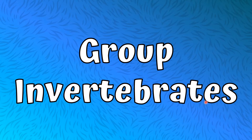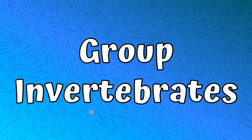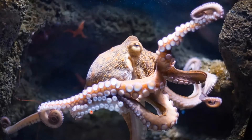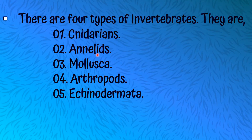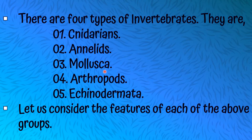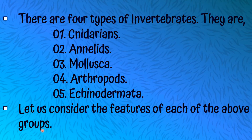Let's talk about the group Invertebrates. Invertebrates means the animals do not have a vertebral column, that means do not have a backbone. There are four types of Invertebrates and they are Cnidarians, Annelids, Mollusca, and Arthropoda. There is also Echinodermata, but in this chapter we only talk about these four groups; we don't talk about Echinodermata. Let us consider the features of each of the above groups.